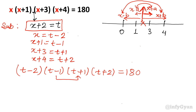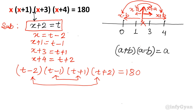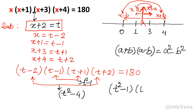Now if you see the two brackets, they form the difference of a square formula. The formula is (a+b)(a−b) = a²−b². So (t−2)(t+2) gives t²−4, and (t−1)(t+1) gives t²−1. So we get (t²−1)(t²−4) equal to 180.